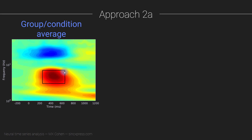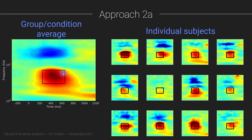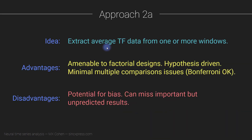You take that region of interest and apply that window back to each individual subject. Here you have the grand average, and here you have individual subjects, and the time-frequency window is applied to each subject — and of course to each of the different conditions as well. So you extract the average time-frequency data from one or possibly more time-frequency windows or regions of interest.